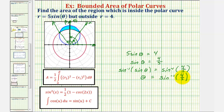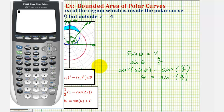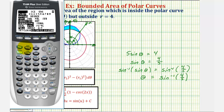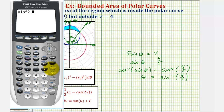Notice this sine value doesn't give a nice reference angle we can find on the unit circle, so we'll use the calculator for a decimal approximation. First make sure we're in radian mode — press the mode key and confirm radian is highlighted. Then press second sine for inverse sine of four-fifths, close parenthesis, and enter. The angle is approximately 0.9273 radians. Instead of using the decimal, we'll leave alpha as inverse sine of four-fifths for the lower limit of integration.